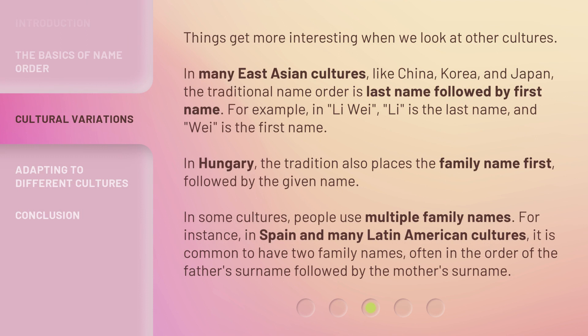Things get more interesting when we look at other cultures. In many East Asian countries, like China, Korea, and Japan, the traditional name order is last name followed by first name. For example, in Lee Wei, Lee is the last name and Wei is the first name. In Hungary, the tradition also places the family name first, followed by the given name.